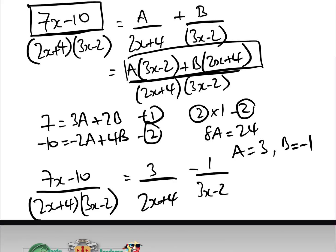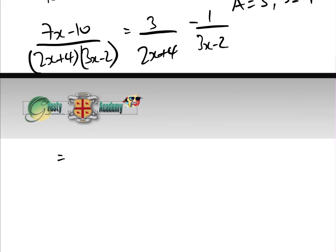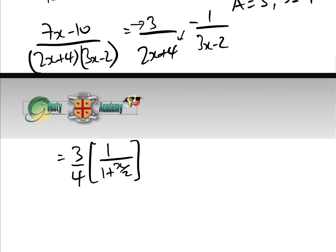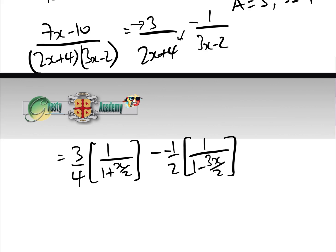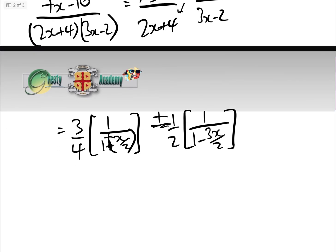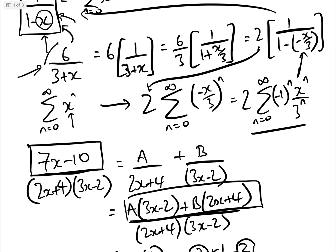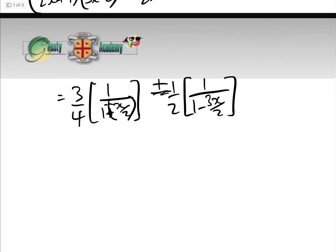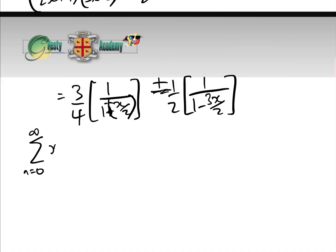Therefore (7x − 10)/((2x + 4)(3x − 2)) = 3/(2x + 4) − 1/(3x − 2). Now we put these in the correct form. Taking out 4 from the first denominator gives (3/4) · 1/(1 + x/2). For the second, taking out −2 gives +(1/2) · 1/(1 − 3x/2), rewriting the minus as −(−x/2), both are now in the form 1/(1 − something).